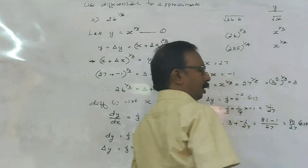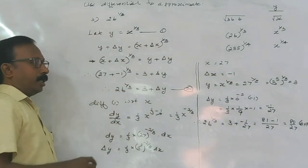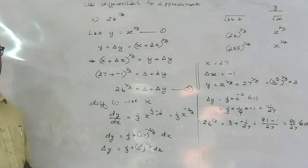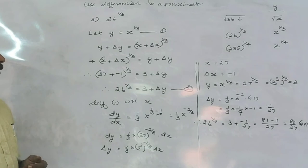Substituting delta y into equation 2: 26 raised to 1/3 equals 3 plus (−1/27), that is 3 minus 1/27. Converting: (27×3 − 1)/27 equals 81 minus 1 over 27, which is 80/27. This is approximately the value of 26^(1/3).